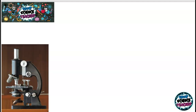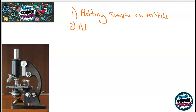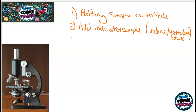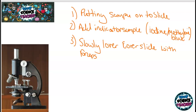The first step when preparing a microscope slide is putting your actual sample onto the slide. Next, you add an indicator solution which helps you see the sample. You might have noticed that for plant and animal cells you use different indicators — for a plant you probably used iodine, and for animal cheek cells you probably used methylene blue. Then you slowly lower the cover slip, probably using forceps. The reason for using forceps is that they prevent air bubbles.